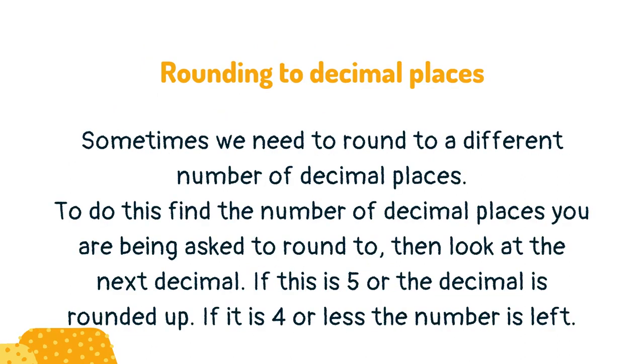Sometimes we need to round to a different number of decimal places. To do this, find the number of decimal places you are being asked to round to, then look at the next decimal. If this is 5 or more, the decimal is rounded up. If it is 4 or less, the number is left.